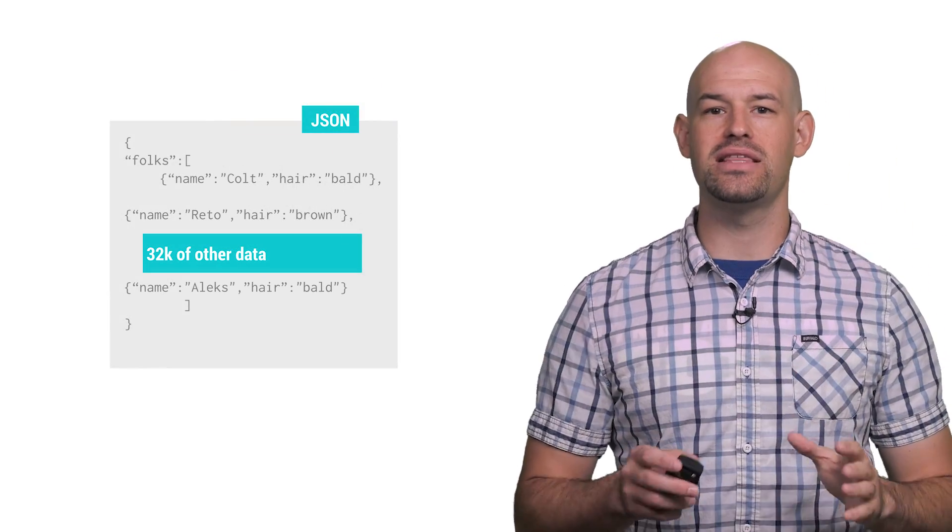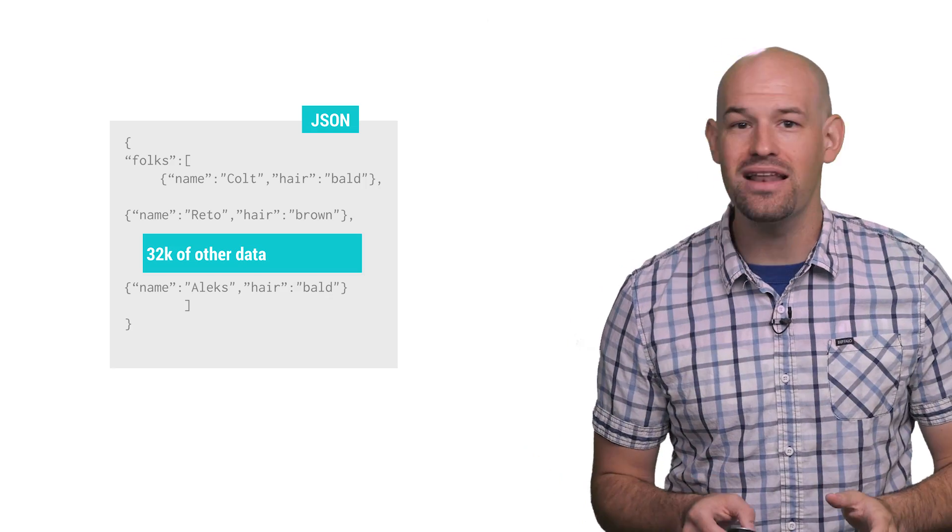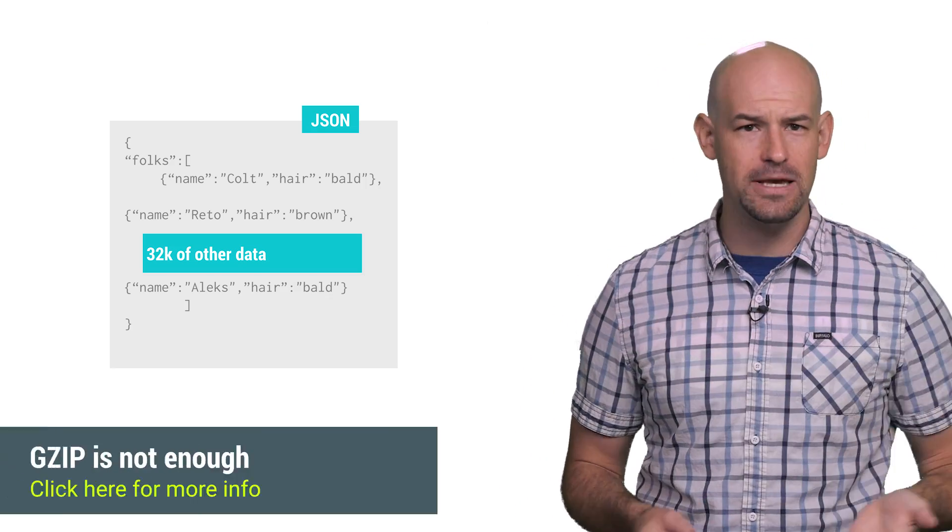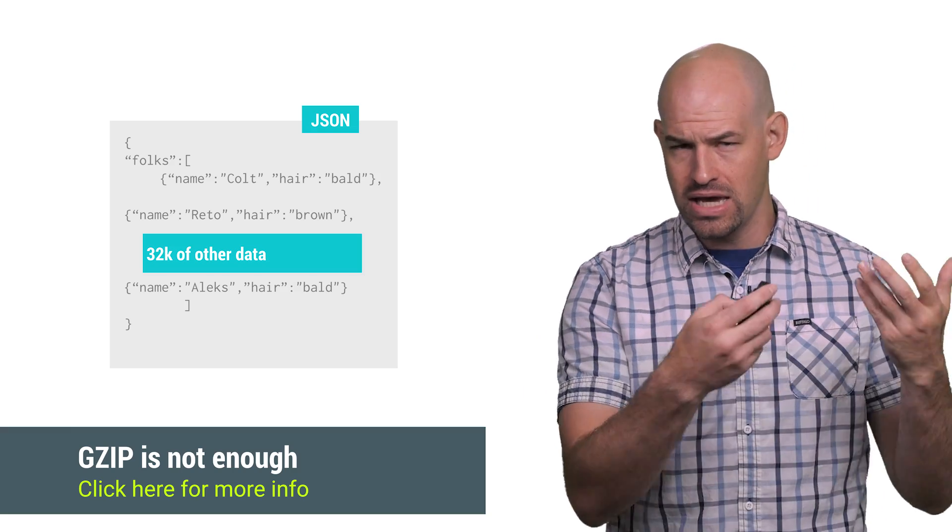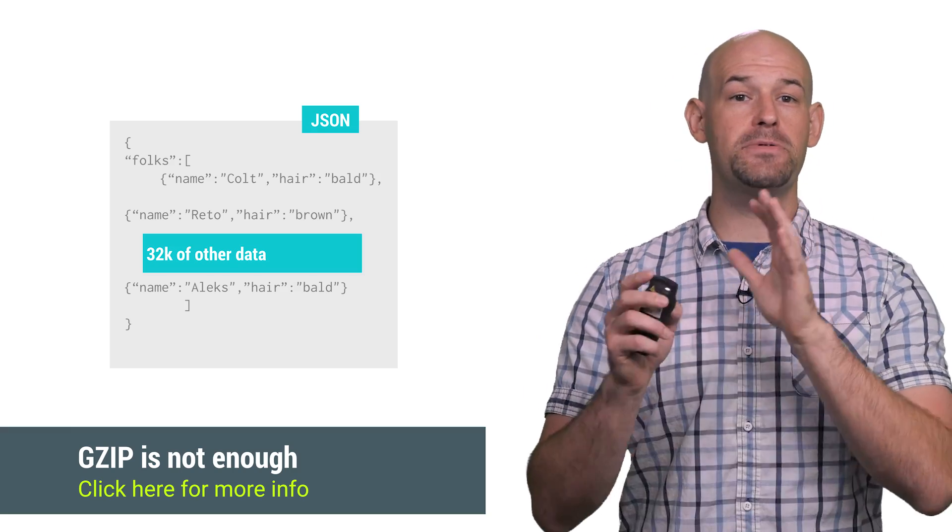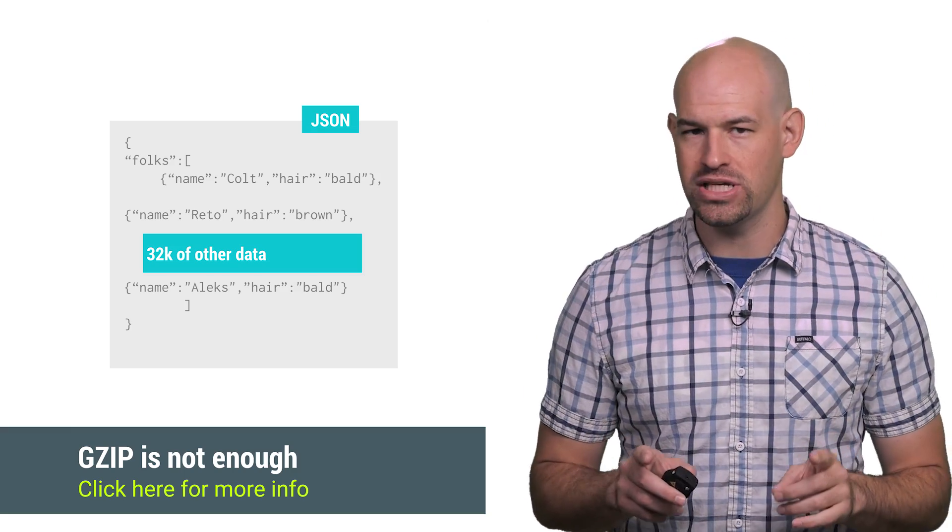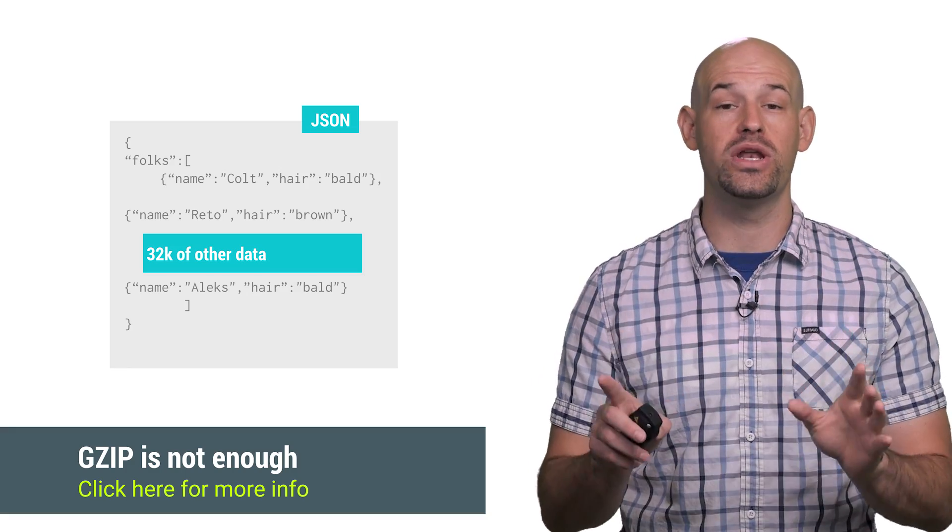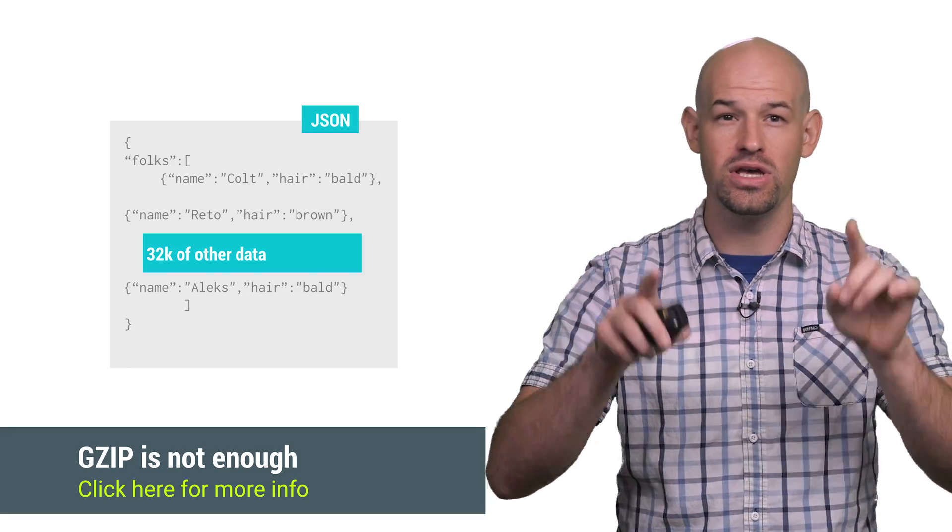Second, you need to understand that this is the worst possible data layout for applying compression to your serialized file. Consider gzip compression, which is standard for most HTTP responses. Gzip compresses data by finding duplicate strings in your file as long as they're within a window of 32k characters from each other.